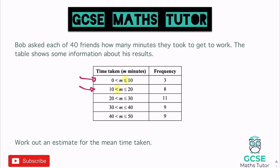Now we follow the same process as before - multiply each midpoint by its frequency. So 5×3=15, 15×8=120, 25×11=275, 35×9=315, 45×9=405. Adding all those row totals: 405+315+275+120+15 = 1130 overall total. The question says there are 40 friends, and adding up the frequency column confirms it totals 40.